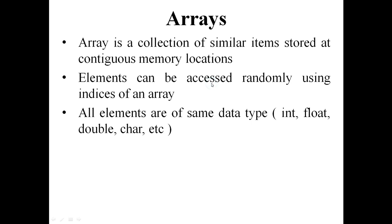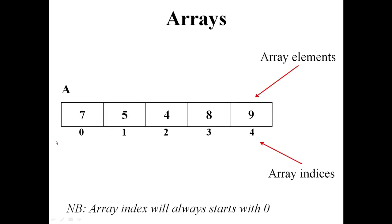We can access array elements randomly. This is an example of an integer array. This array size is 5. The array elements are 7, 5, 4, 8, and 9. Array indexes always start with 0. Here, the array index is from 0 to 4. For a size 10 array, the array index is from 0 to 9.